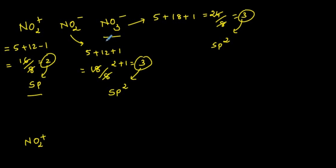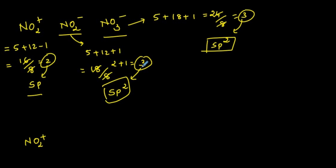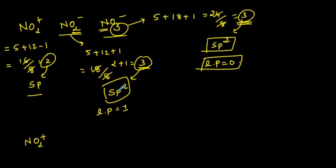So NO2+ has SP hybridization and thus the highest bond angle. Now NO3− and NO2− both have SP2 hybridization. Finding lone pairs: in NO2−, number of groups is 3, central element N has 2 atoms attached, so lone pair = 1. In NO3−, number of groups is 3 with 3 atoms attached, so lone pair = 0. Therefore bond angle order is: NO2+ > NO3− > NO2−.